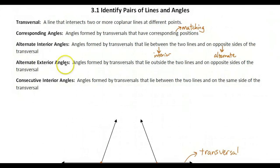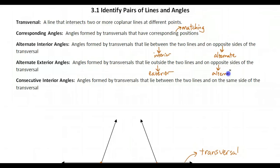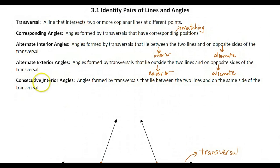Alternate exterior angles are angles that lie outside the two lines — they're in the exterior and on opposite sides of the transversal. They alternate. And the final vocabulary word is consecutive interior angles. They're on the same side of the transversal. Consecutive means one right after the other.